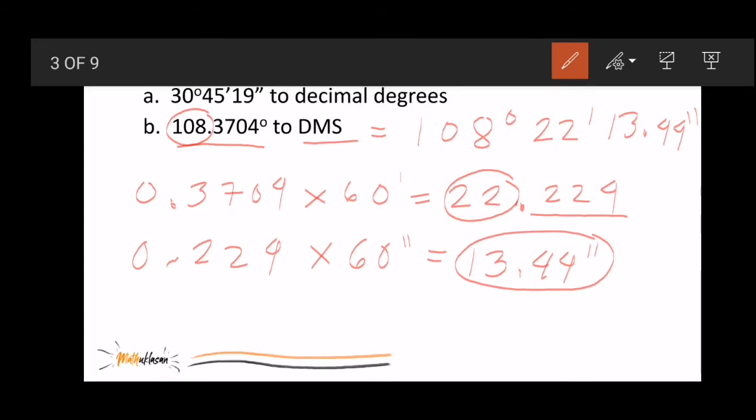So, the conversion of 108.3704 degrees is 108 degrees, 22 minutes, and 13.44 seconds.